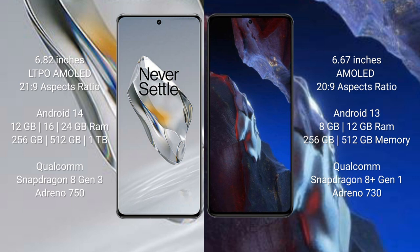OnePlus 12 comes with 12GB, 16GB, and 24GB RAM options, with 256GB, 512GB, and 1TB internal storage options, powered by a Qualcomm Snapdragon 8 Gen 3 processor and GPU Adreno 750.